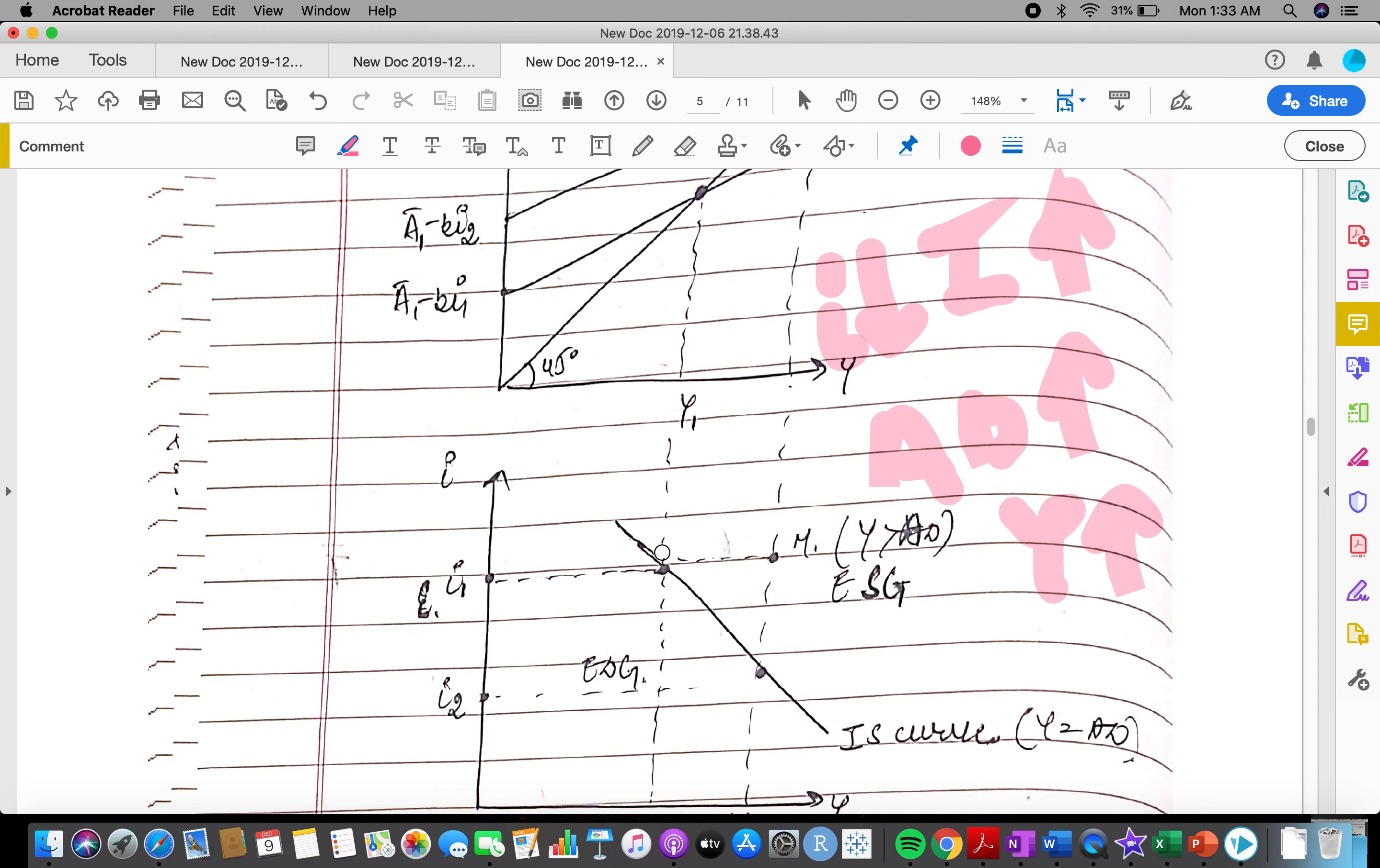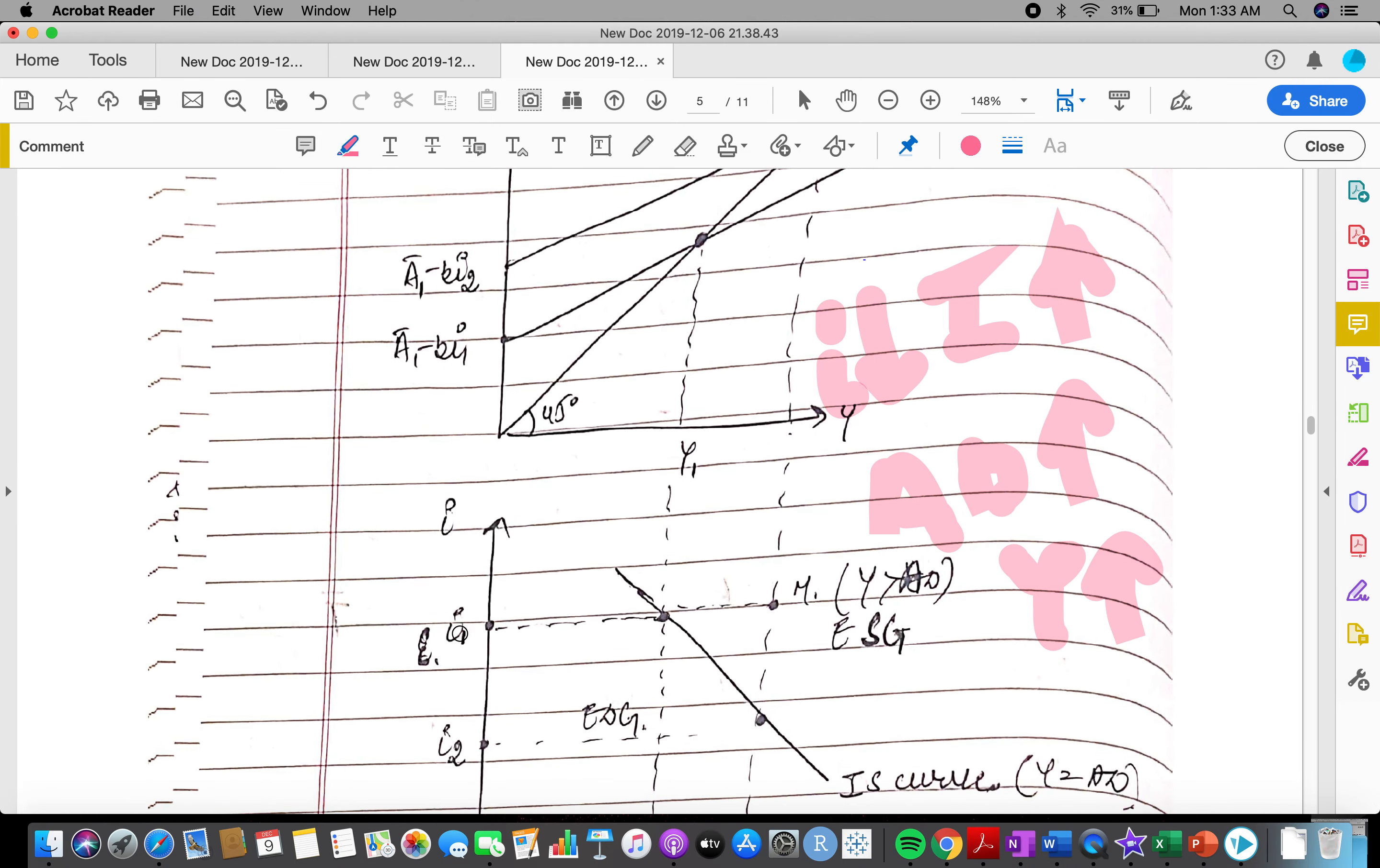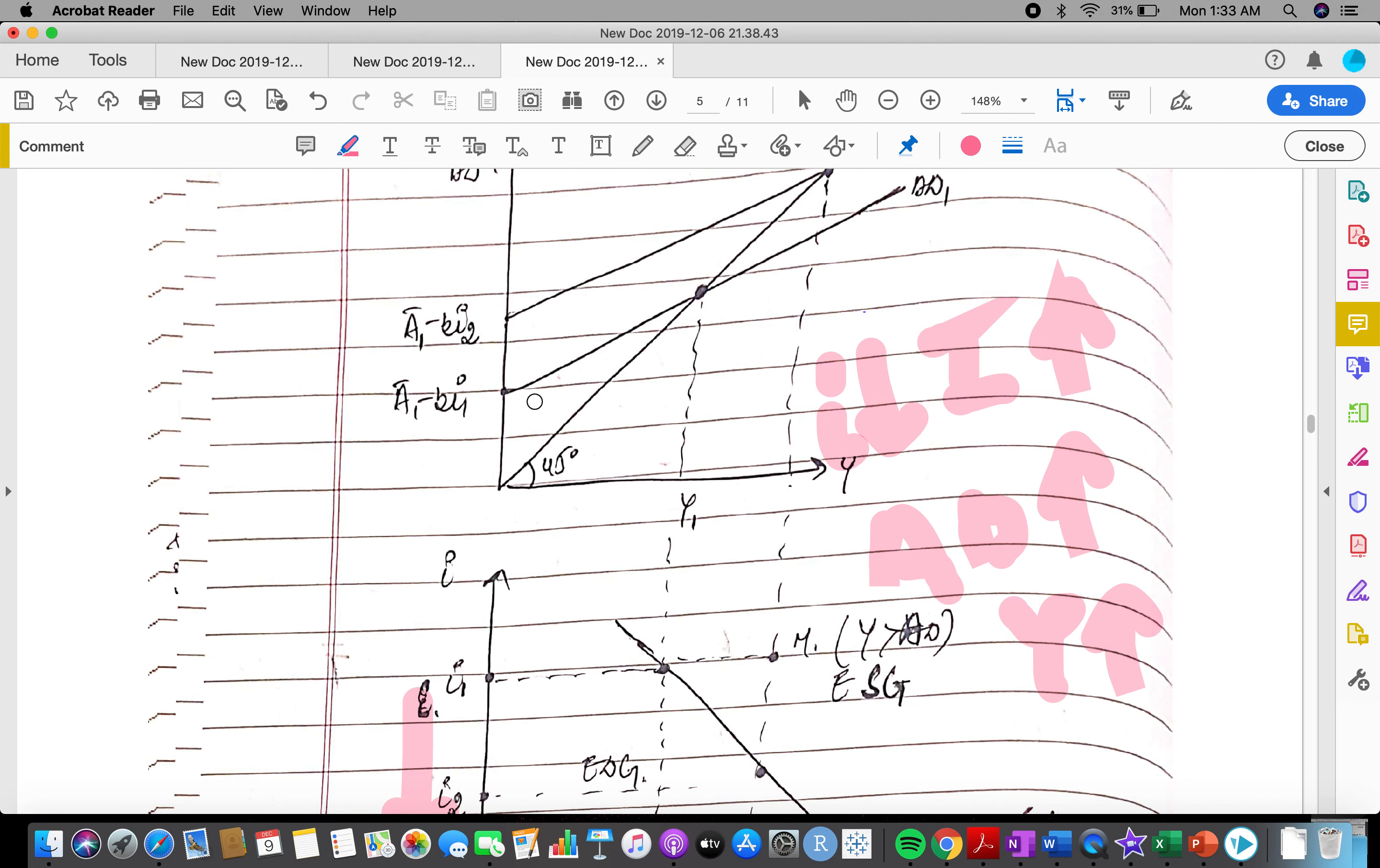When aggregate demand increases, output or income would both increase. So that's the phenomena behind the derivation of IS curve. When interest rate falls, we'll see an upward shift in AD curve because of increase in investment since the cost of borrowing is reduced.